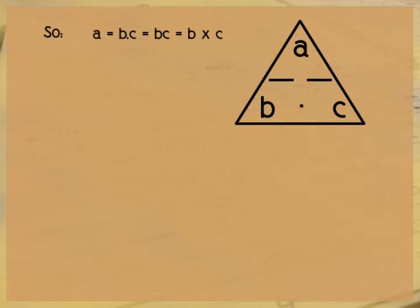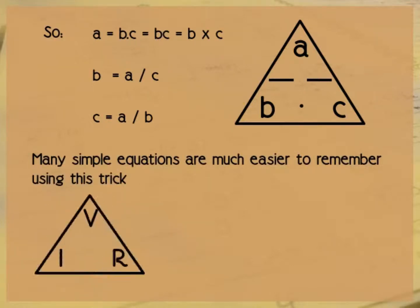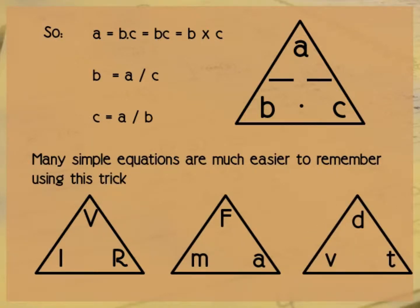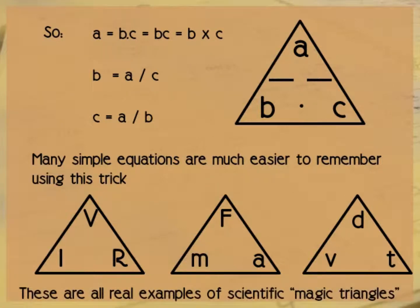So let's see how that works. Here's our magic triangle again. And if we want to find A, we look at where is B and C. And they are both on the bottom. Let's look along the bottom. B dot C, that's multiply. So A equals B multiplied by C. If we want to find B, then we look at A and C. A is at the top, C is at the bottom. So A divided by C equals B. And the same for C. If we want to find C, then we just take A at the top and divide it by B at the bottom. And this makes many simple equations much easier to remember. And that's all the magic triangle is. It is an easy way to remember some simple equations. And these are all real examples of scientific magic triangles.